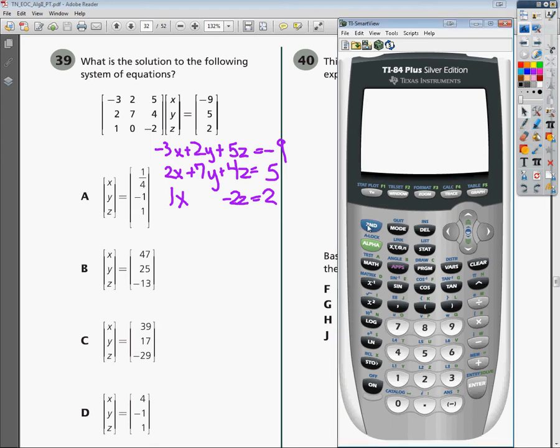In order to do that, I need to go in and hit second, then the matrix button. Once again, I'm using the TI-84 plus. I need to click over and edit out one matrix for myself. This is going to be a 3x4, because I've got three rows and four columns. The way it sets up is this one is the rows, and this one is how many columns you have. So I'm going to do that and hit enter.